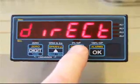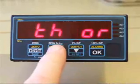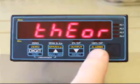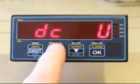We can use either of these two middle buttons here to choose theoretical or direct. When you're happy with your chosen calibration method, press OK and then you'll be asked to select whether your input will be voltage or current.